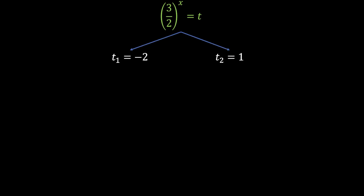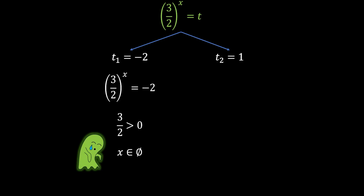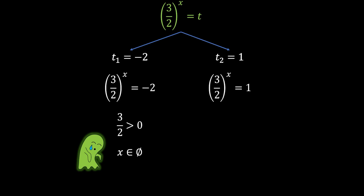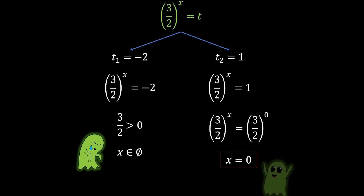Now we will substitute these values for t back into our original substitution. In the first case, 3 over 2 to the power of x equals minus 2. Here we have a problem because 3 over 2 is a positive number, and since the base is positive, there is no value for the exponent that can make it negative. So in this case there is no solution for x. In case two, 3 over 2 to the power of x equals 1. We can write 1 as 3 over 2 to the power of 0, because any base to the power of 0 equals 1. From this we get that x equals 0, and this is our solution.